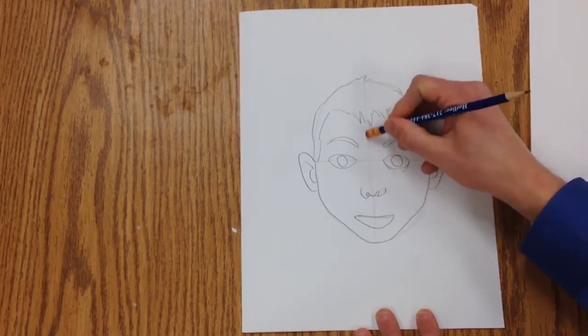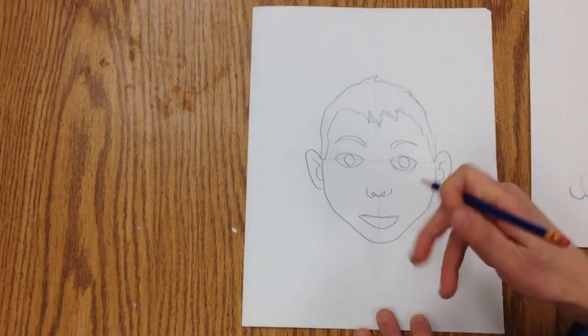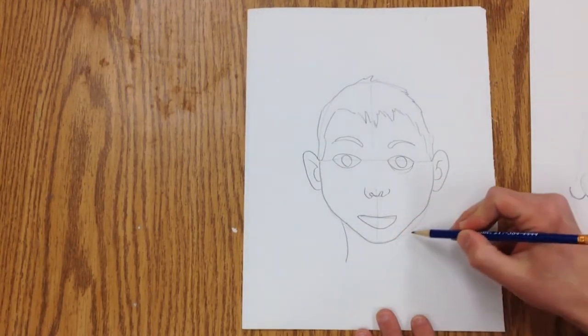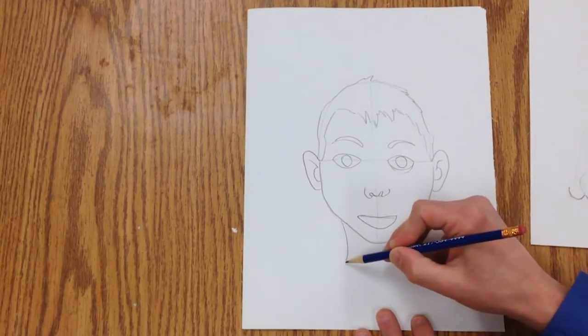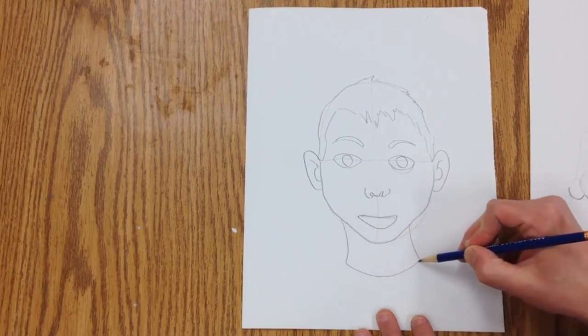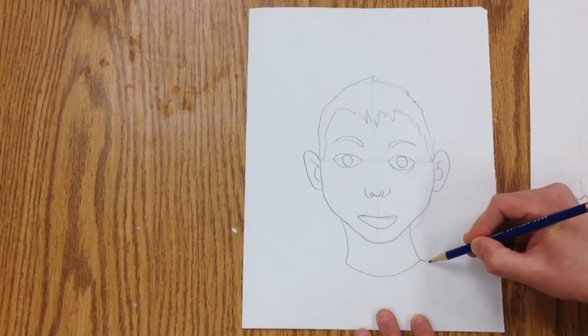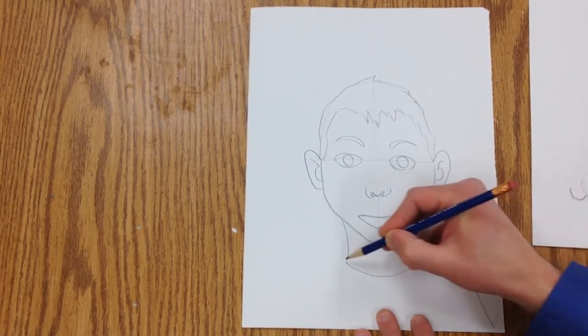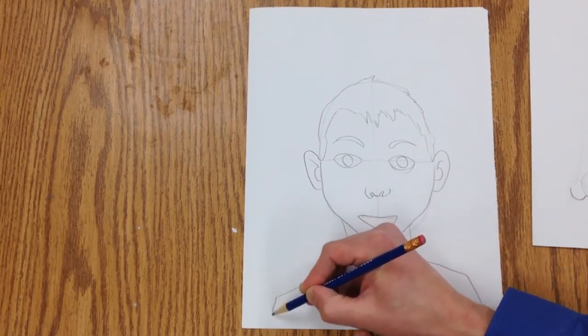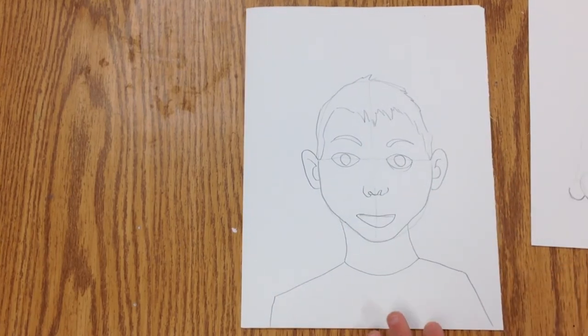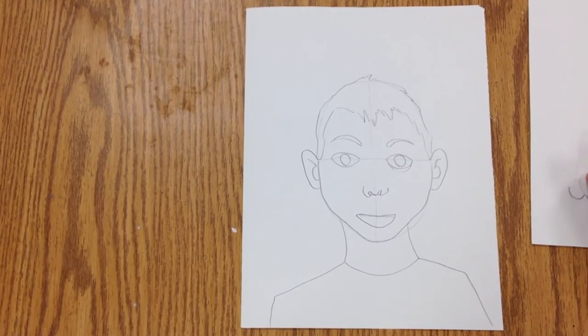So these guidelines we can erase. I'm going to add the neck, and I'm going to curve and make the collar, and the shoulders will come out like this. There's a basic sketch.